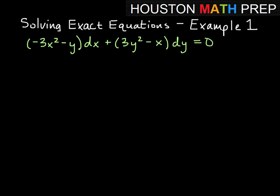So we'll just make a note of what our M is and what our N is. So here our M is this expression here, so M is equal to negative 3x squared minus y.